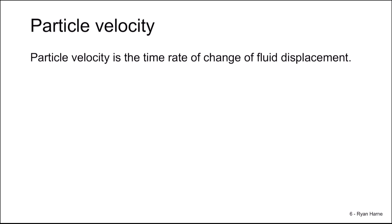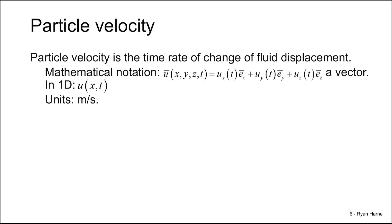The next acoustic variable is particle velocity — the time rate of change of fluid particle displacement. The mathematical notation is u as a function of x, y, z, and time, shown with an overbar vector notation. We have unit vectors in x, y, z teamed up with their amplitudes changing in time. In one dimension it's not exactly a vector, although it does have a sign — a positive or negative direction. Units are meters per second.